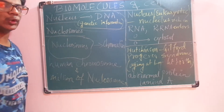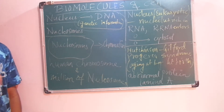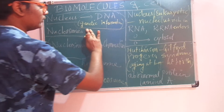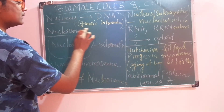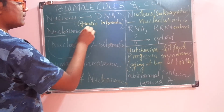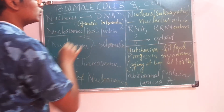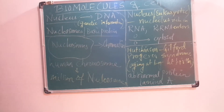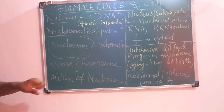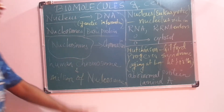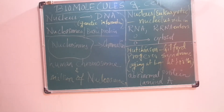Now let's talk about nucleosomes. A nucleosome consists of basic proteins called histones with which eukaryotic DNA is associated. So eukaryotic DNA is associated with basic proteins called histones, and that is why the complex is called a nucleosome.